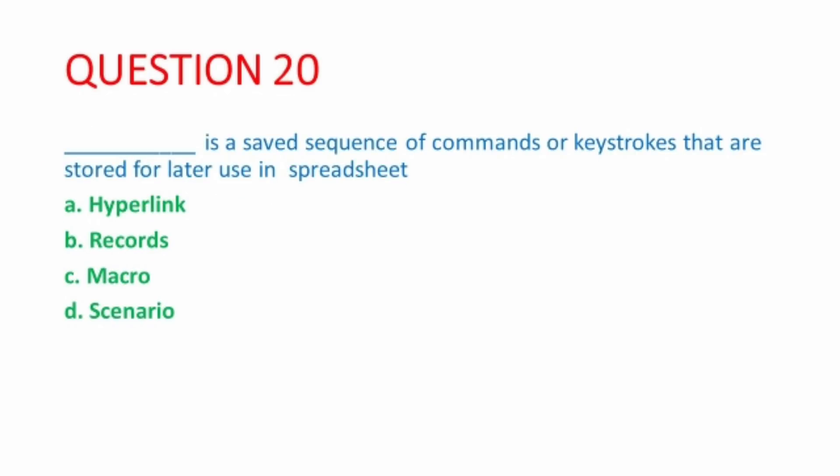Next MCQ, macro is a saved sequence of commands or keystrokes that are stored for later use in spreadsheet. Its answer is macro. Macro is like a function. Just as in function we write commands, write instructions, and save it, then we can use that function whenever we have the requirement. We just have to write its name and it will automatically perform those commands. In the same way, we can use macro also.